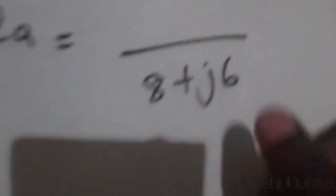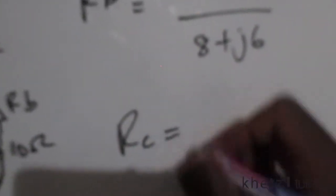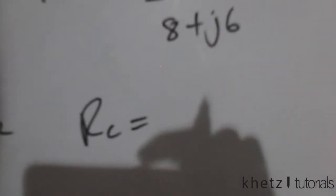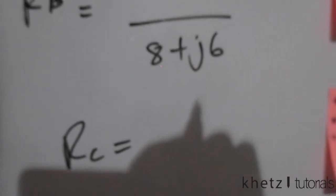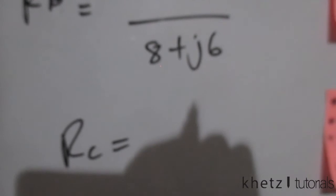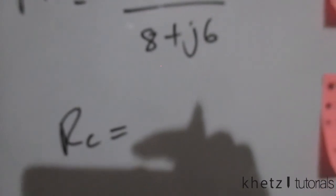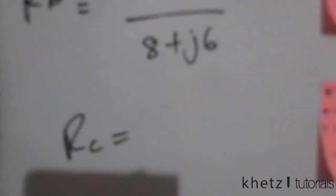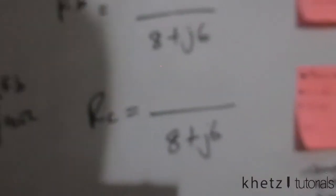For all these values — RB and RC — the denominator is going to be the same, and everything is going to be divided by 8+J6.